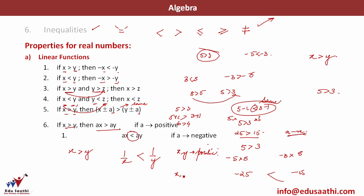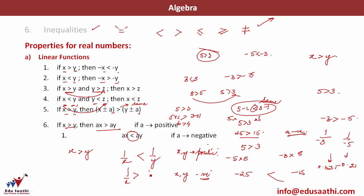Whereas if x and y are both negative, let's look at the case: minus 3 is greater than minus 5. If I take the reciprocal, minus 1/3 and minus 1/5. Minus 1/5 is minus 0.2 and minus 1/3 is minus 0.33. So minus 1/3 is the greater number. The original inequality direction is maintained when both numbers are negative.